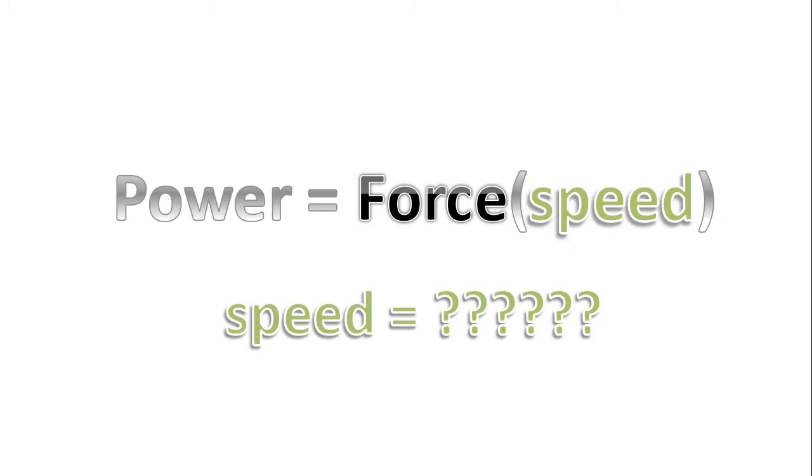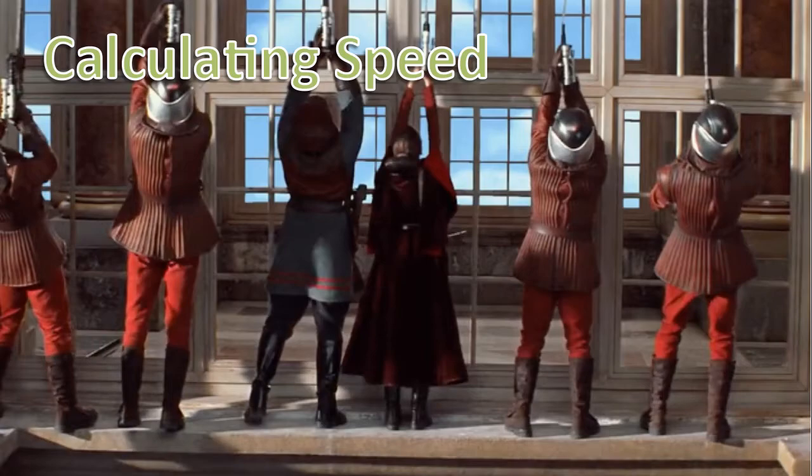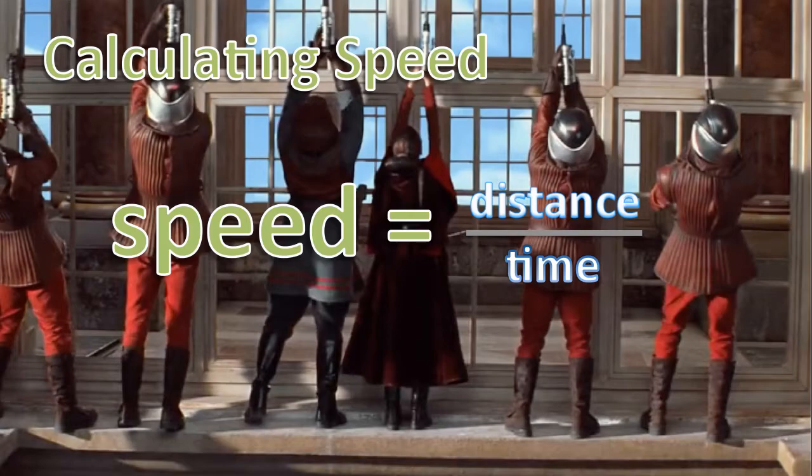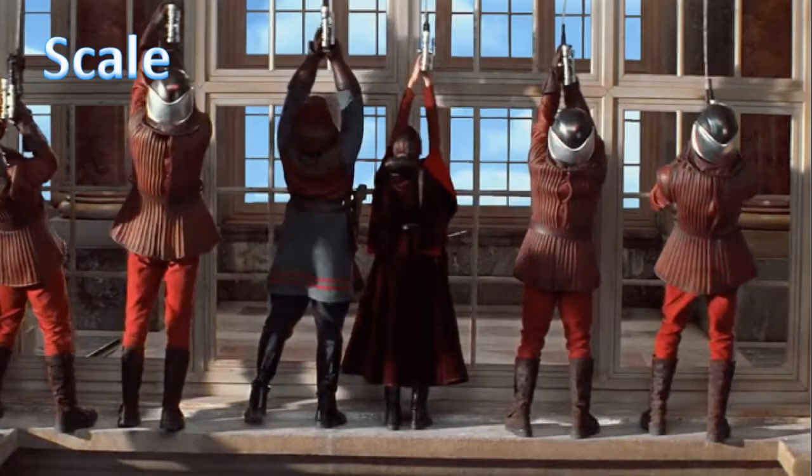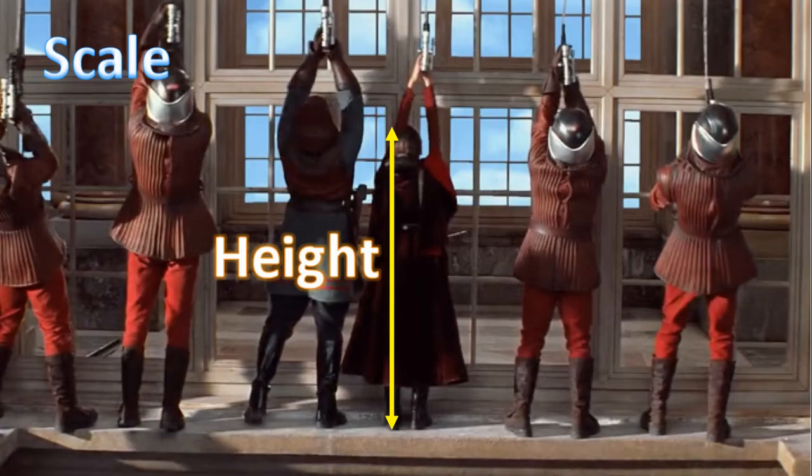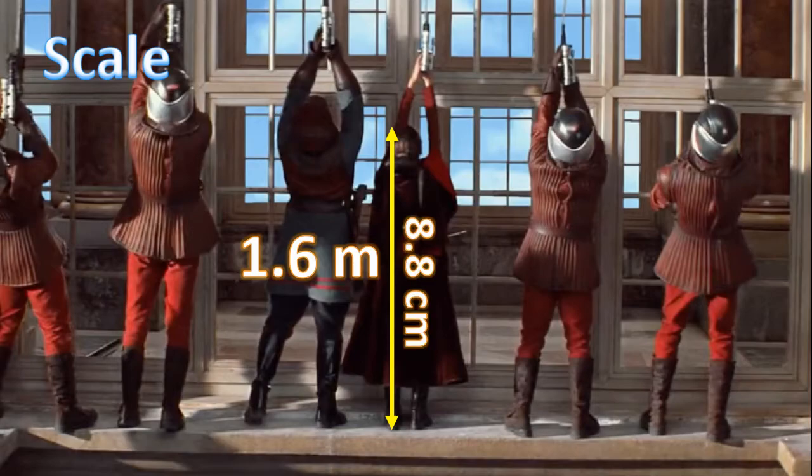And so the question is speed. We already know the force. What is the speed? So now our focus is going to be on calculating speed. Remember that speed is distance over time. And so to start off, we'll need a scale. And we'll use this line here as a scale. Her height, according to Google, is 1.6 meters. Now when the length of that line is measured, using the program, it's 8.8 centimeters.